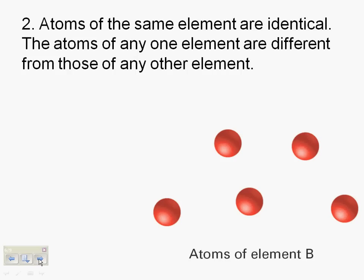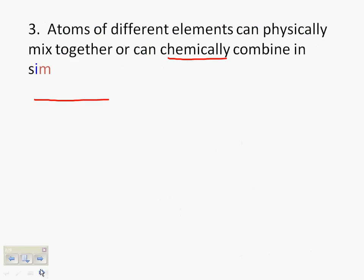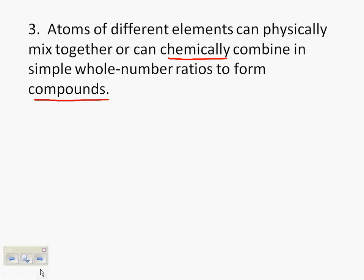Third part of his theory: atoms of different elements can physically mix together or can chemically combine in simple whole number ratios to form compounds. So John Dalton is beginning to explain how elements can form compounds. A simple whole number ratio. Think about H2O. Two hydrogens to one oxygen. That's a simple whole number ratio.